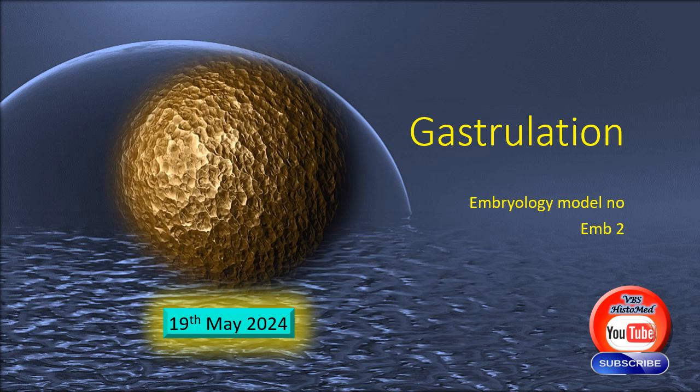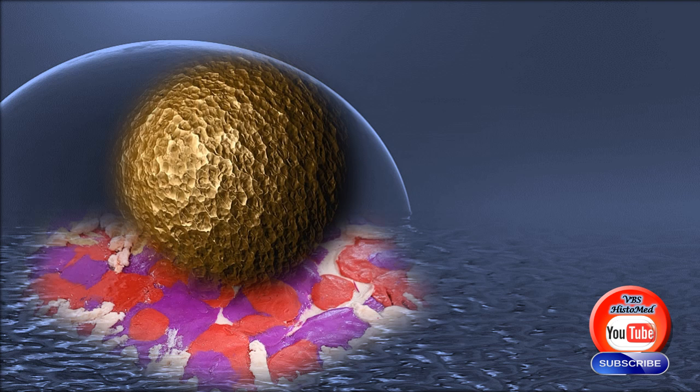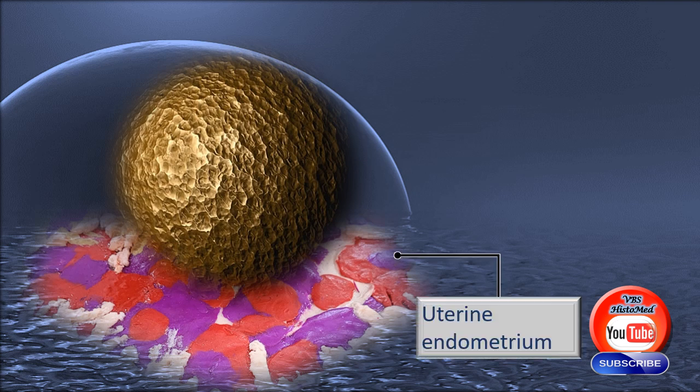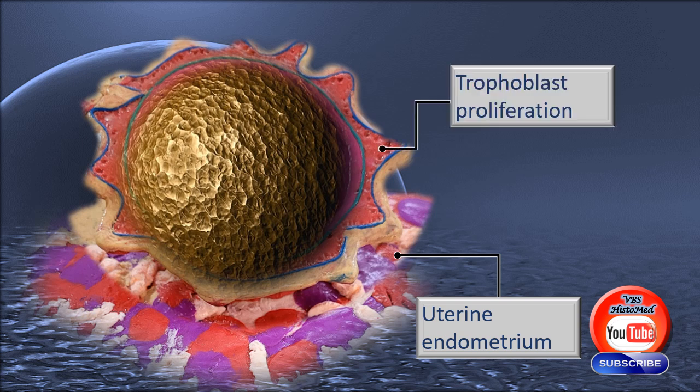The embryo is already implanted in the maternal endometrium, the uterine endometrium with blood vessels. Therefore, nourishment to the embryo is guaranteed. The embryo starts burrowing into the maternal endometrium by trophoblastic proliferation.